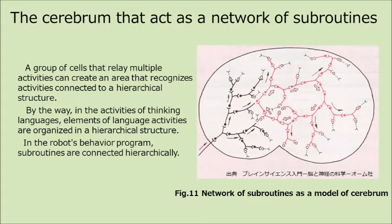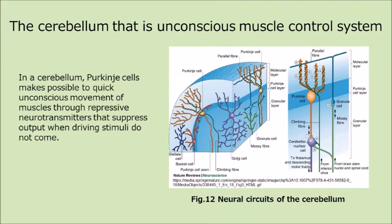By the way, in the activities of thinking and languages, elements of language activities are organized in a hierarchical structure. In the robot's behavior program, subroutines are connected hierarchically. In the cerebellum, Purkinje cells make possible quick unconscious movement of muscles through repressive neurotransmitters that suppress output when driving stimuli do not come.